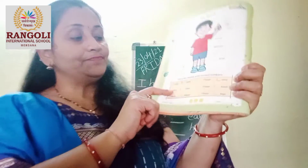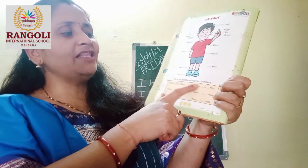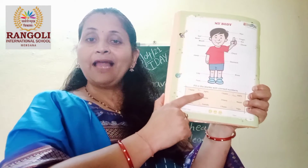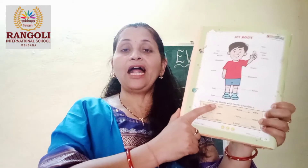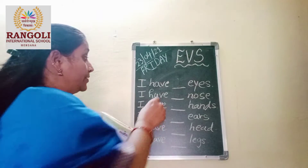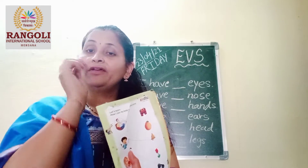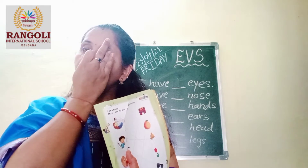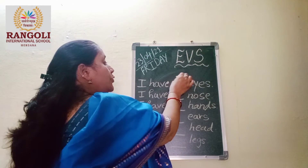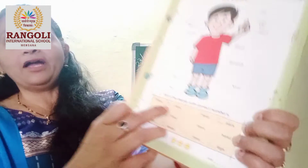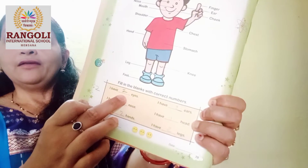Okay, kids. Fill in the blanks with correct numbers. This is our class work, so everyone start this work. Start with me. How many eyes do we have? Count it — one and two. So I have two eyes. Write the number two in the first blank.